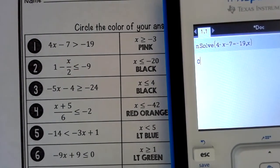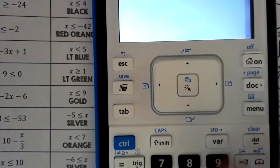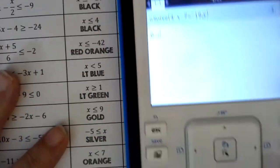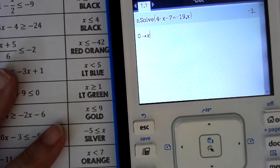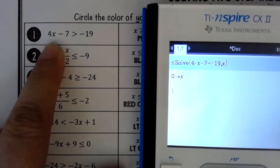So we're going to push 0, control, and var. Control is this blue button and var is right above the number 7. And then we type in X, enter.